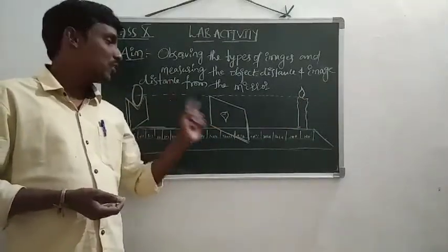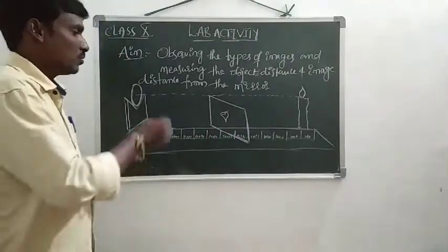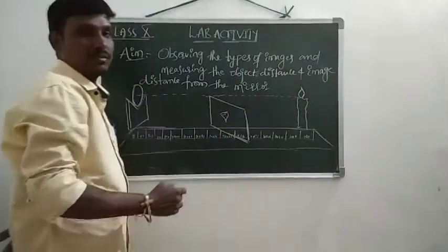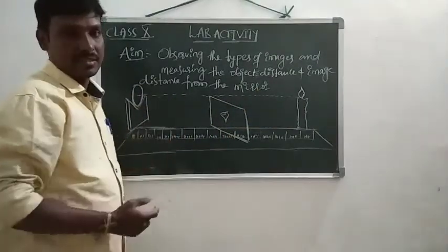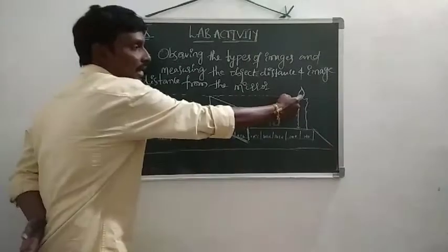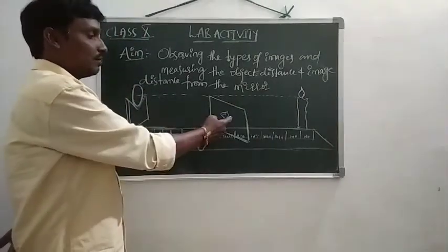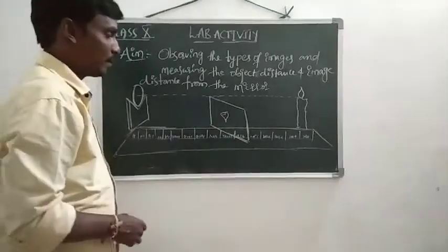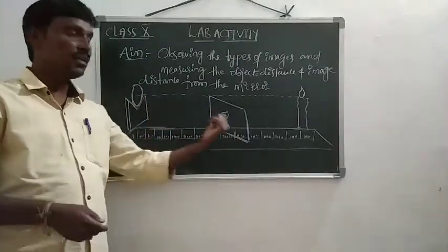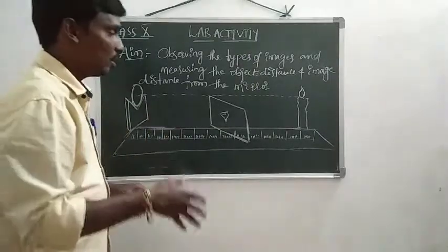The distance of the candle from the mirror is the object distance, since the flame of the candle acts as the object. The paper acts as a screen, and the distance of the paper from the mirror is the image distance.